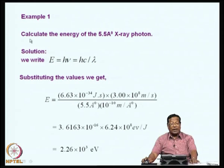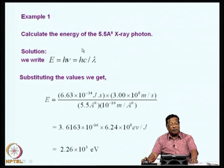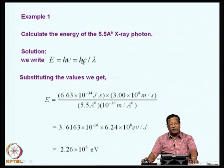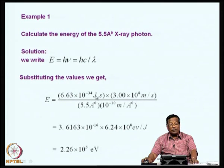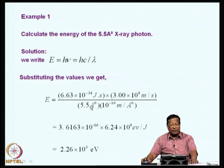Take this example: we want to calculate the energy of a 5.5 angstrom X-ray photon. We write E = hμ = hc/λ. We know h, c, and λ. Substituting these values, we get E = 6.63 × 10⁻³⁴ joule·second multiplied by 3 × 10¹⁰ meters per second, divided by the wavelength converted into meters. What we get is 2.26 × 10³ electron volts.